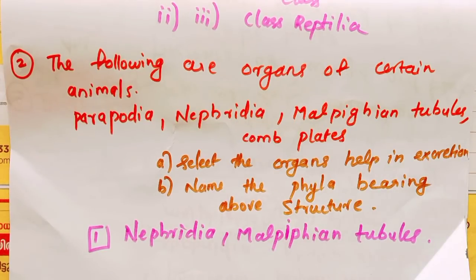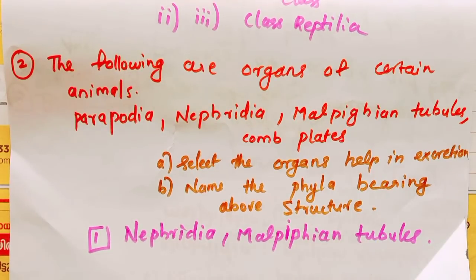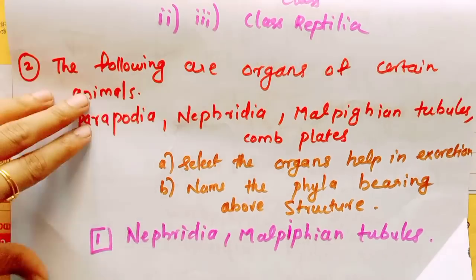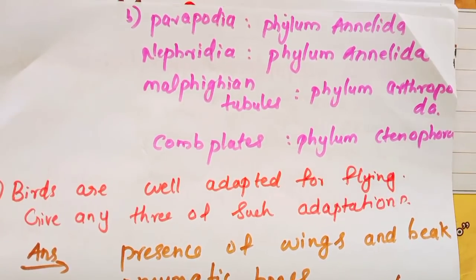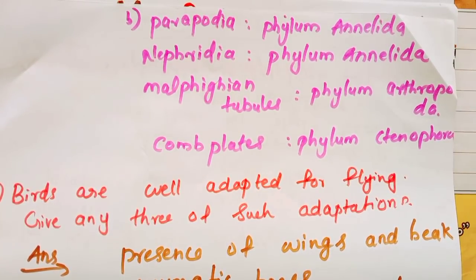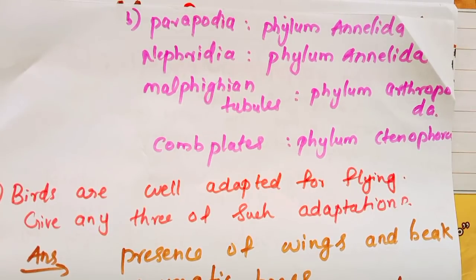We have these organs: parapodia and nephredia — the phylum is Annelida. Malpighian tubules — the phylum is Arthropoda. Coplates — the phylum is Ctenophora.